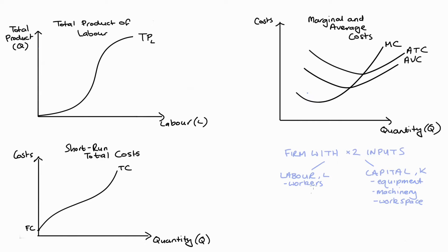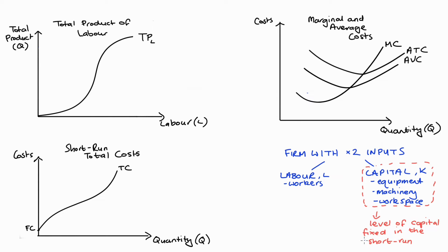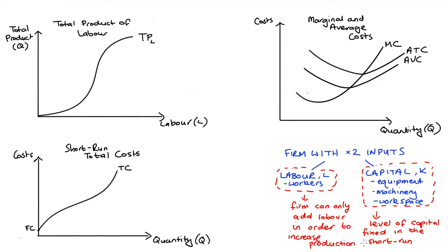We start by thinking about a firm with two inputs to production: labor (L), which are our workers, and capital (K), which is the equipment, machinery, and workspace. Because we're in the short run, capital is held fixed. This means that if the firm wants to increase quantity produced, it can only do so by increasing the amount of labor used. This brings us to the total product of labor curve, with labor on the horizontal axis and total quantity (Q) on the vertical axis.